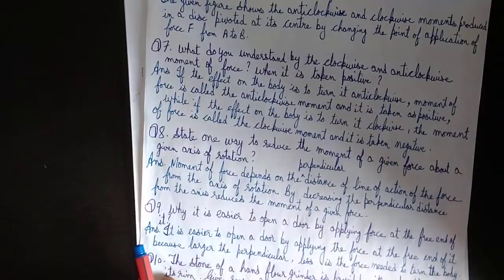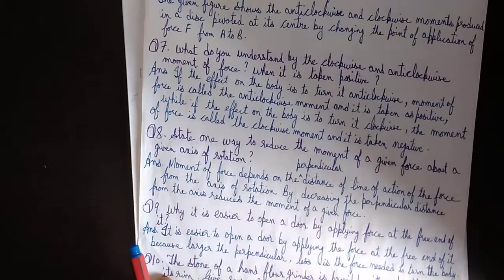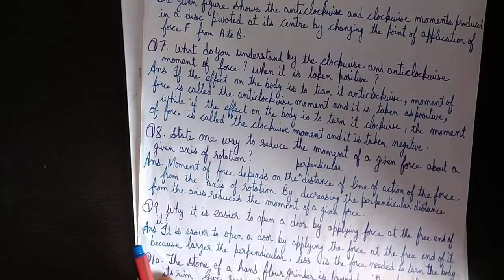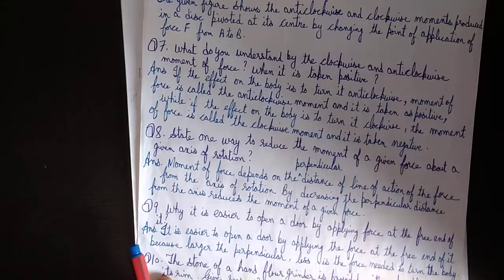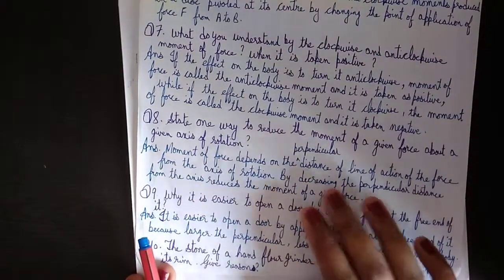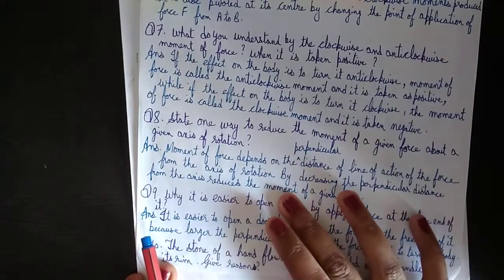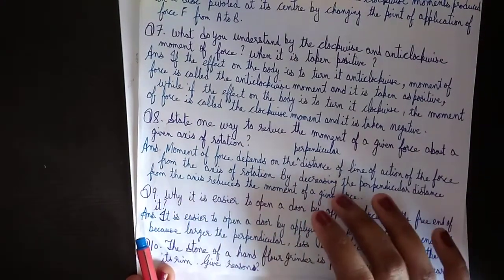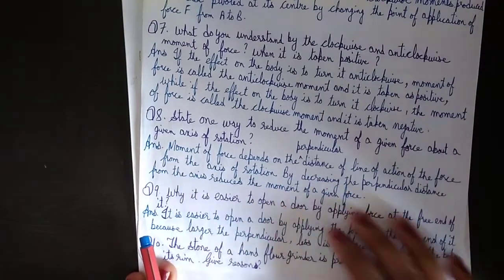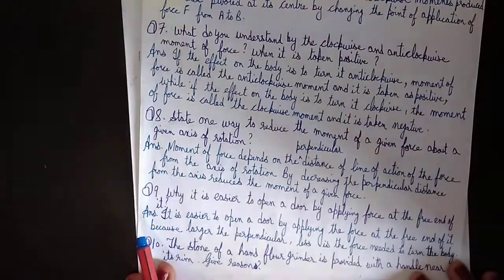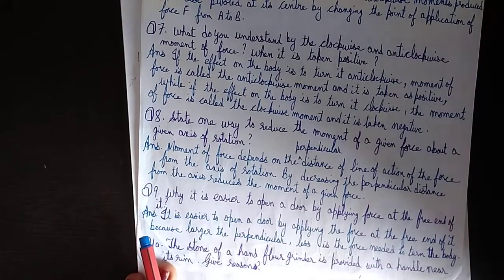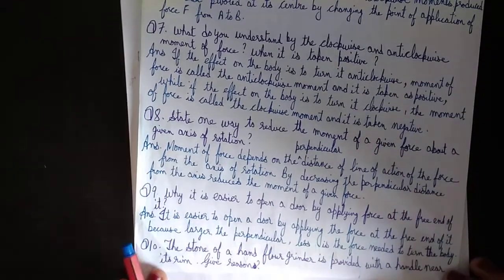State one way to reduce the moment of a given force about a given axis of rotation. The moment of force depends on the perpendicular distance of the line of action of force from the axis of rotation. By decreasing the perpendicular distance from the axis, we reduce the moment of the given force.